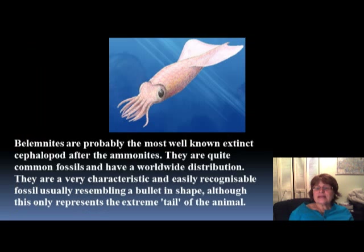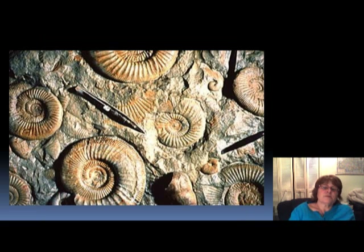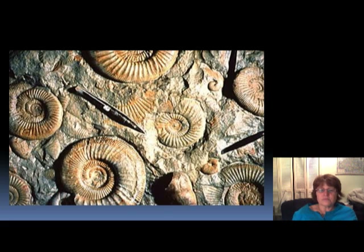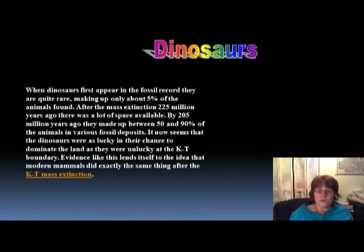The Belemnites are probably the most well-known extinct cephalopod after the Ammonites. They are quite common, shaped like cigars, and very similar to Ammonites except they are straight. There are famous polished Belemnite rocks coming out of Morocco. Turtles first appeared in the Triassic — they are reptiles but not part of the Archosaur group, and they lived in much the same way as turtles do today.